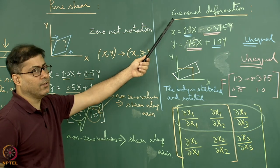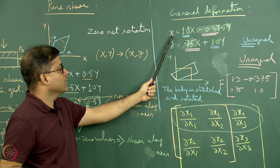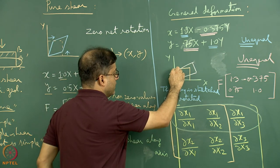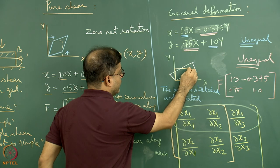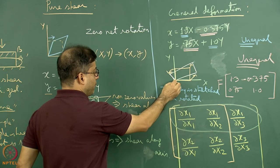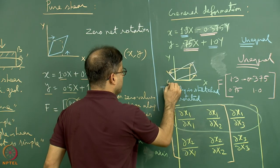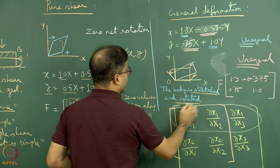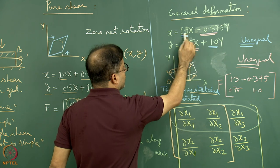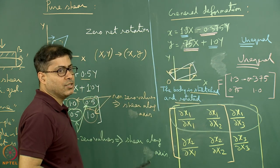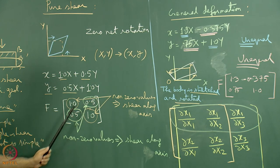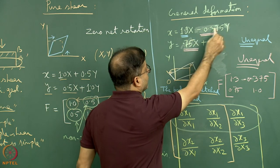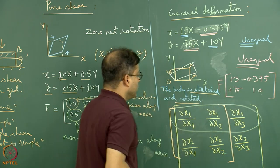Now we move into general deformation. This can be represented as small x equals some number minus some other number multiplied by y. The orange rectangle is the starting shape; by some deformation, points have moved, with one point remaining at the origin where x and y axes intersect. The body is both stretched and rotated. Here, the two off-diagonal numbers are not the same — in sharp contrast with pure shear where they were equal.